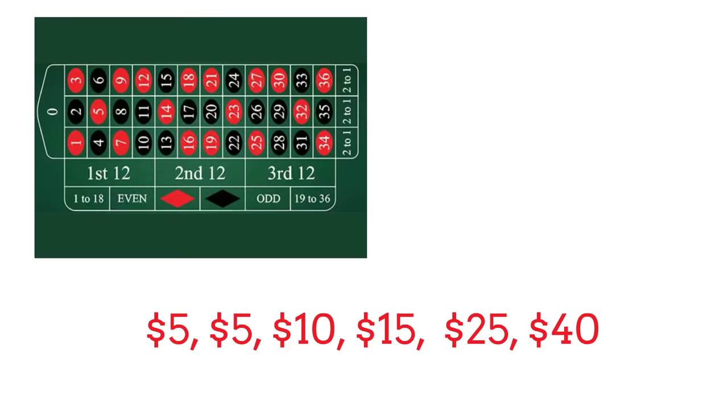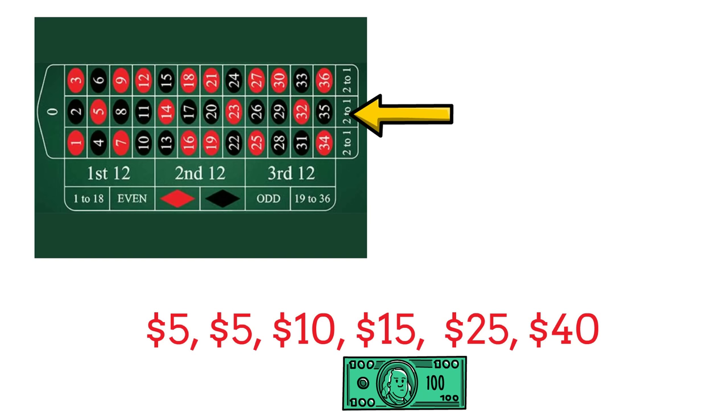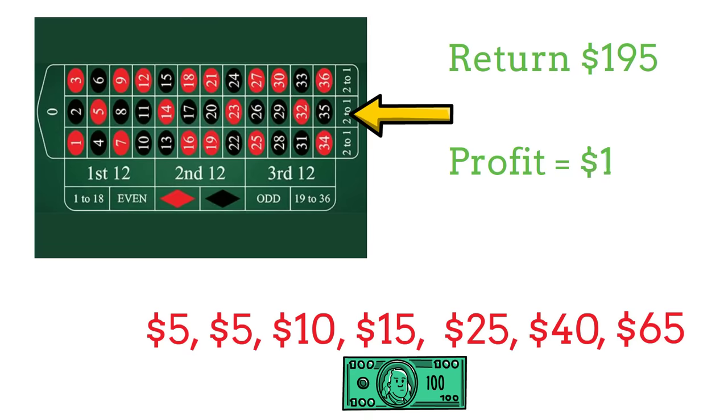Let's run our Fibonacci system after losing 6 bets again, but this time we will use the middle column bet in our example. So going back to our sequence, we've already lost $100 and our next sequence bet dictates that we need to bet $65. Now with this bet paying 2 to 1, if this bet wins it's going to return $195, giving us $130 profit on that spin and a $30 profit when we consider our earlier losing bets of $100.